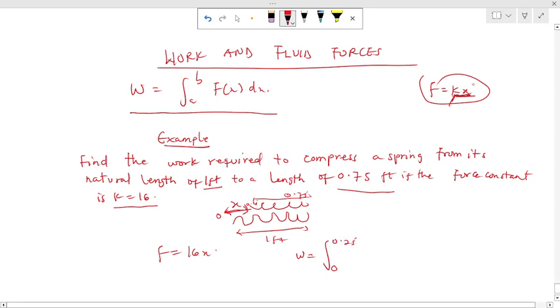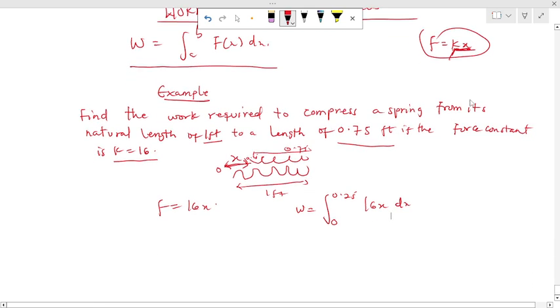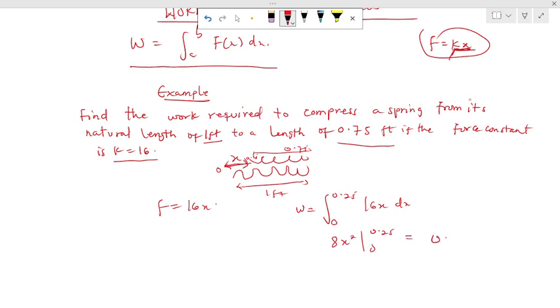So we use 0 to 0.25. Then I'll have 16x dx. So once I have this expression, the next thing I'm going to do is I'll do my simple integral, and this is going to give me 8x squared, 0 to 0.25, then that will give me 0.5.